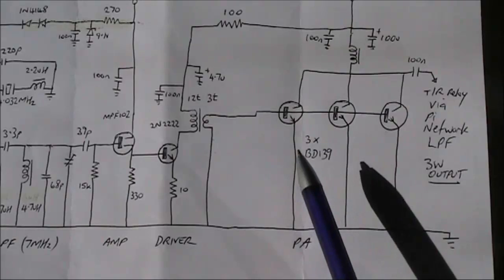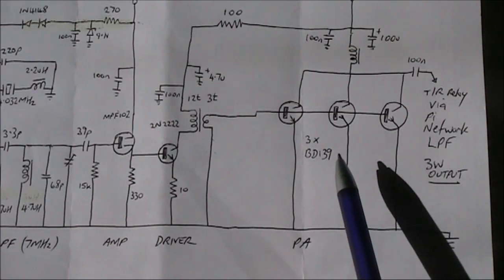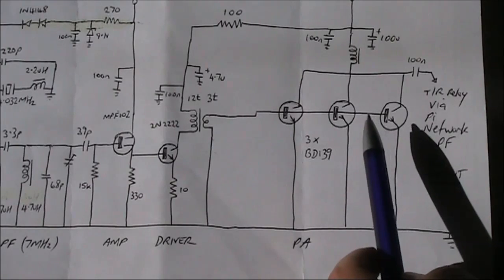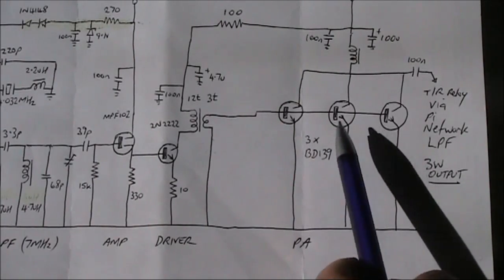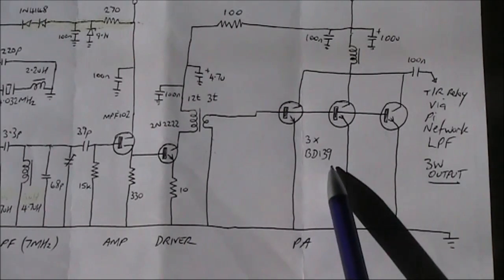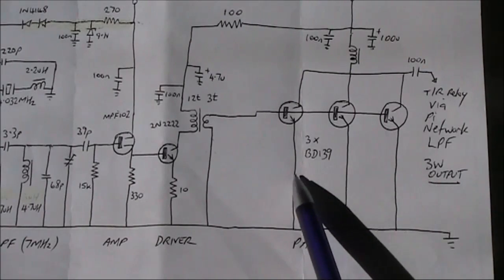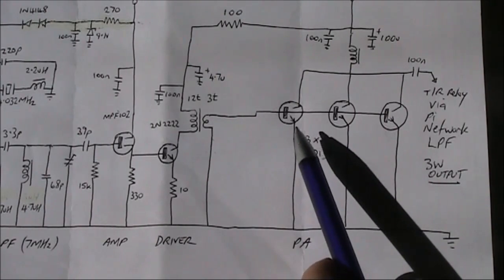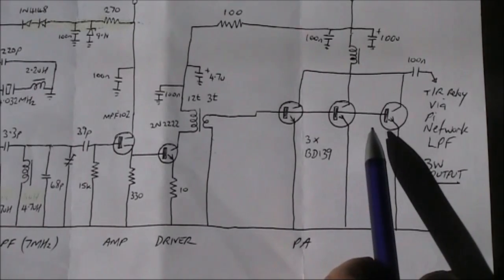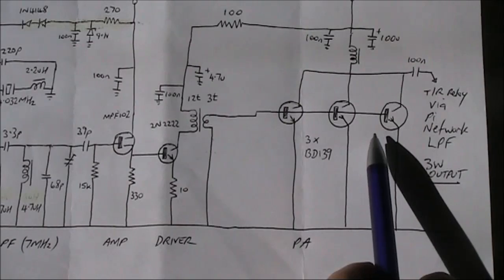Over here on the far right are three BD139s. They're connected in parallel. If you have problems with one of them overheating, then I would suggest putting in emitter resistors. Start off with, say, 1 ohm in each. That provides more even current between the transistors. I haven't found that necessary, though, in this particular rig.